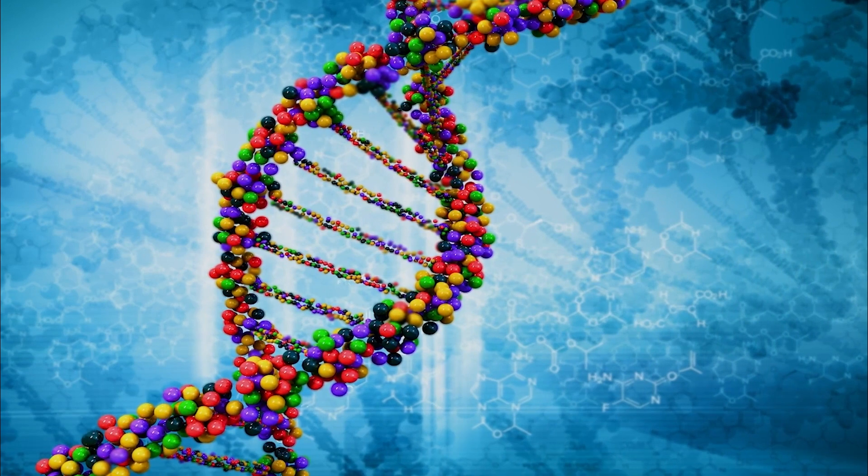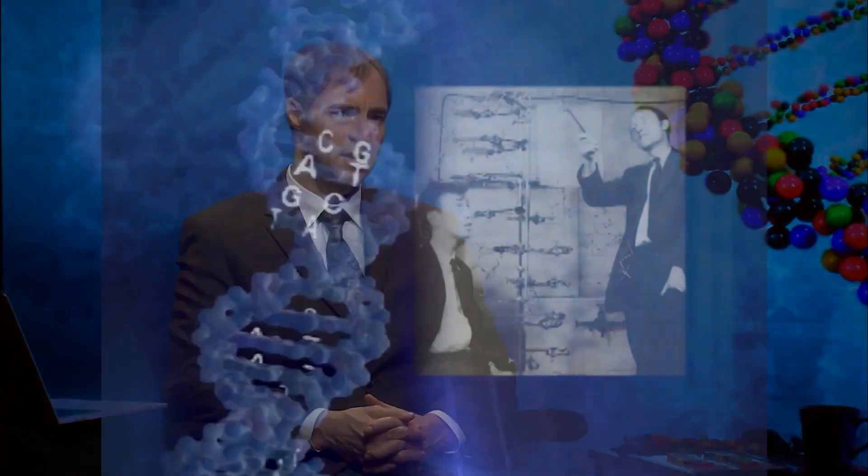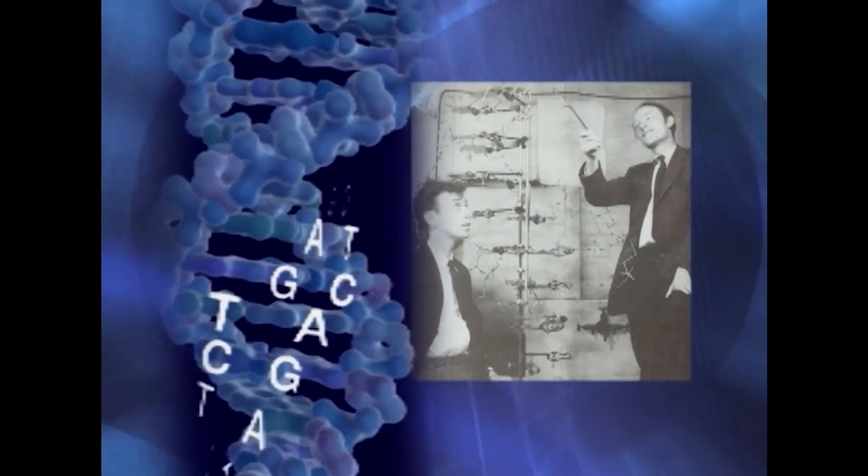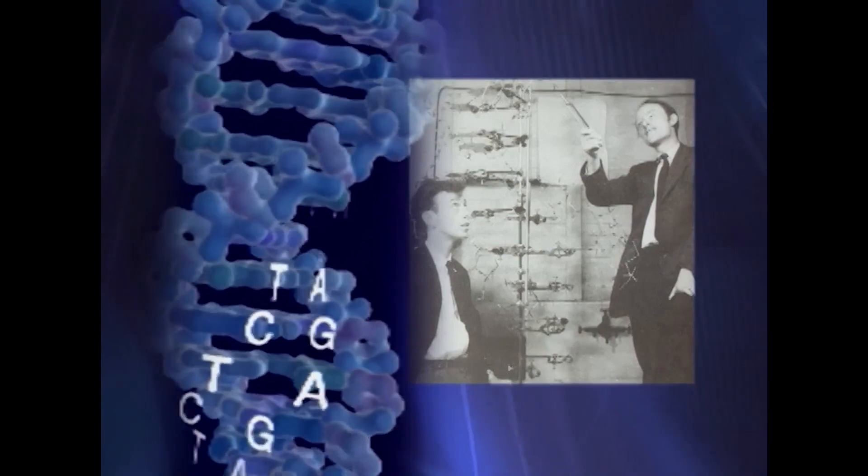Watson and Crick made a striking discovery in 1953, which is that they were able to elucidate the structure of the DNA molecule. By that time, many scientists were suspecting that DNA had something to do with the transmission of information or hereditary information. And Watson and Crick were able to figure out what DNA looked like, how it was put together. And that suggested that it was an information-carrying molecule.